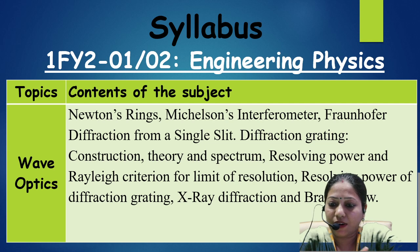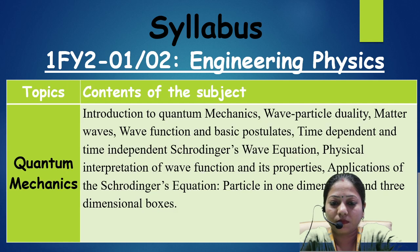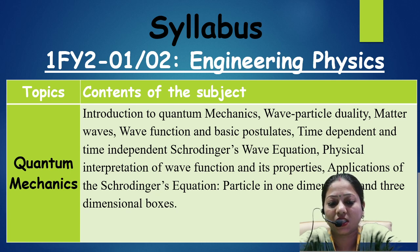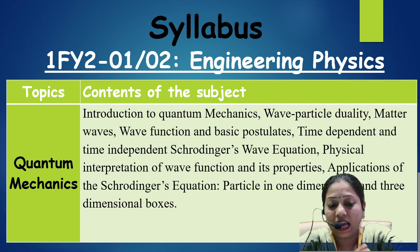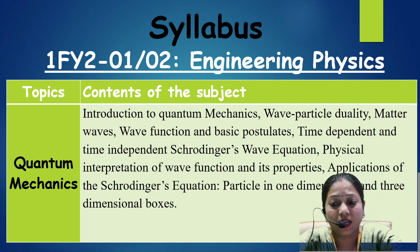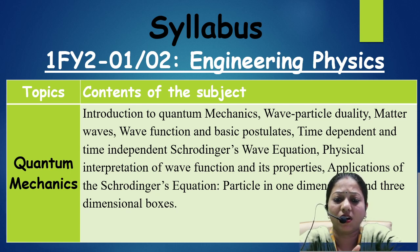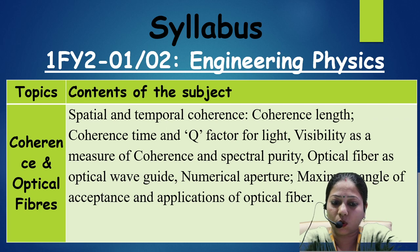Also in module one: Fraunhofer diffraction, diffraction grating, resolving power — all based on diffraction of light — and x-ray diffraction (XRD). Module two is quantum mechanics: light has dual nature — wave nature discussed in wave optics, and particle nature discussed in quantum mechanics, covering wave-particle duality, matter waves, wave function, basic postulates, Schrödinger equation, physical interpretation, and its application. Module three is coherence and optical fiber: spatial and temporal coherence, visibility of coherence, optical fiber, optical waveguide, numerical aperture, maximum angle of acceptance, and various applications.